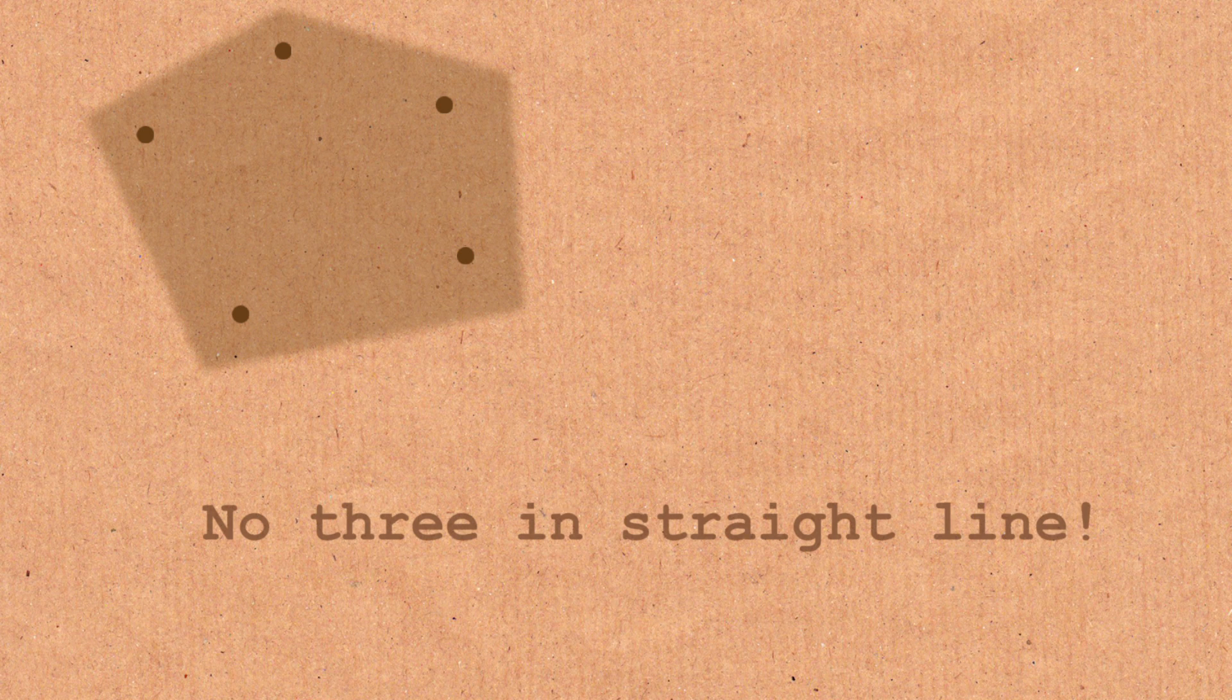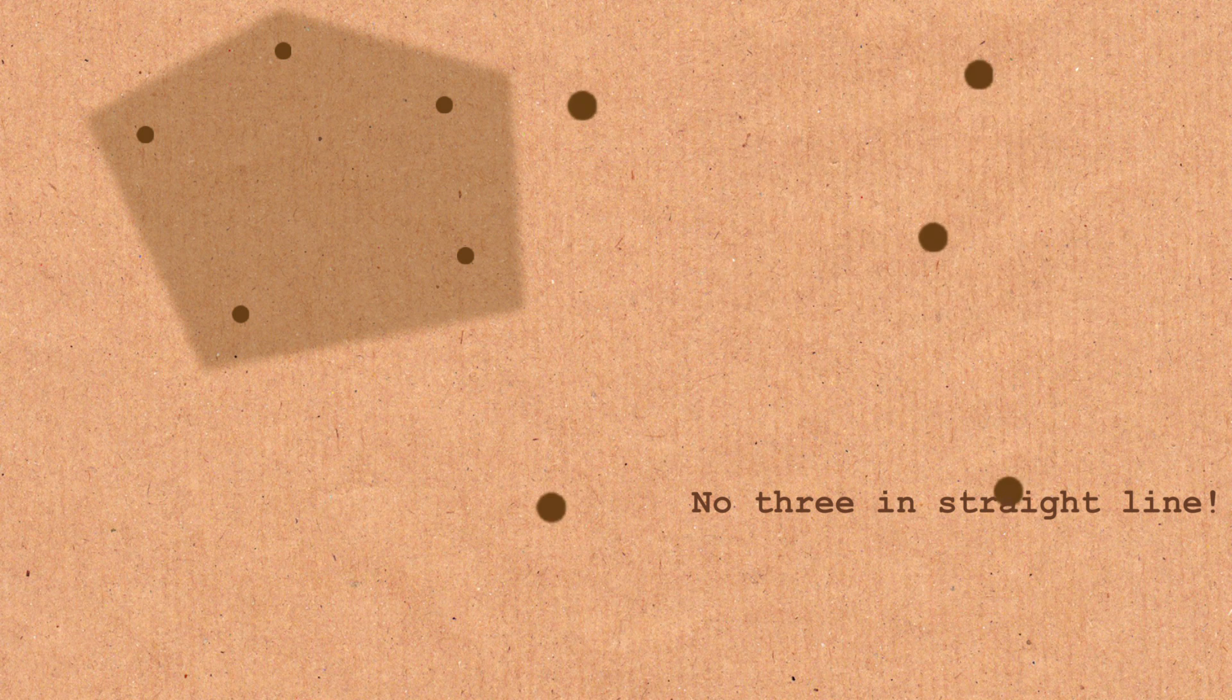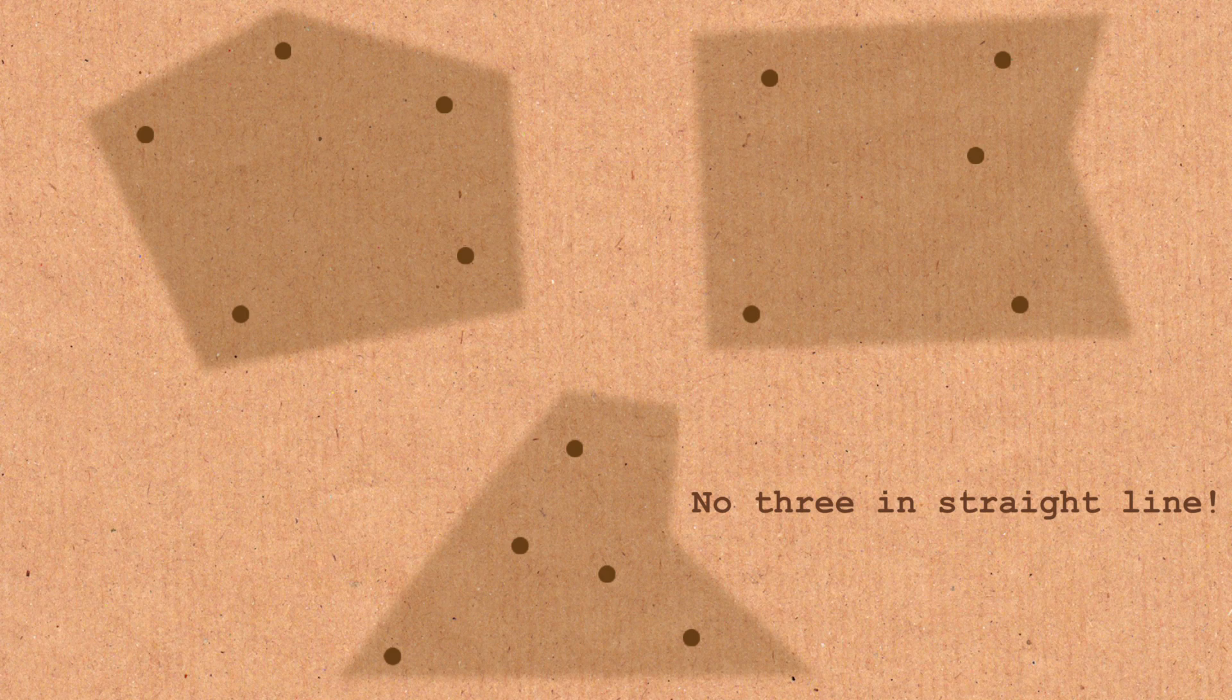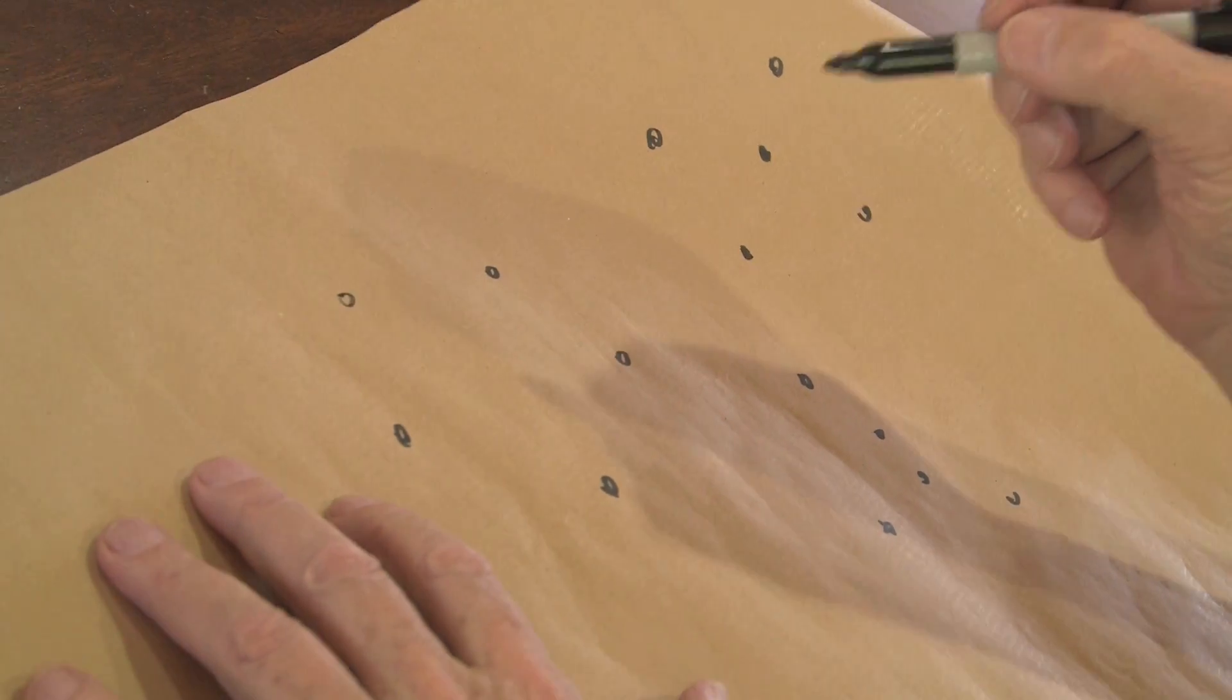If I put five points on the table here, in the plane, so that no three are in a straight line, I could do it this way, or I could do it like this, or I could do it in a different way. What you're looking for, you're looking for a convex set of four points. And what does convex mean?